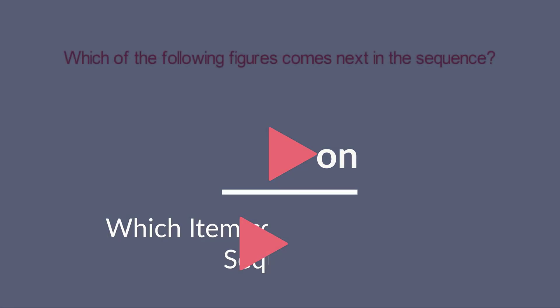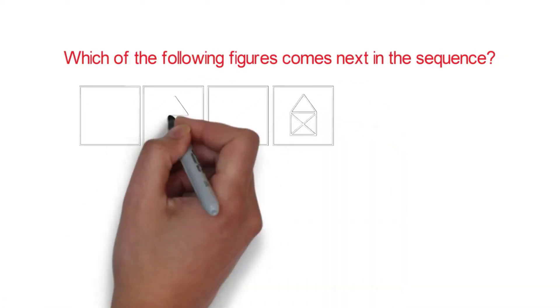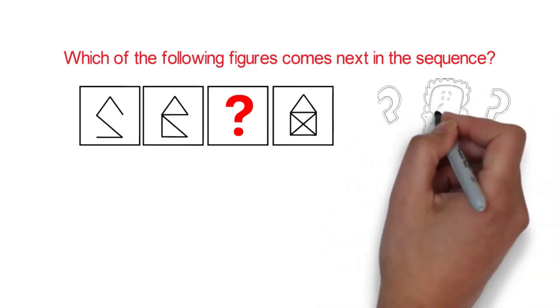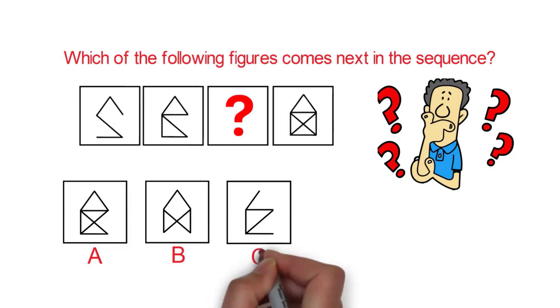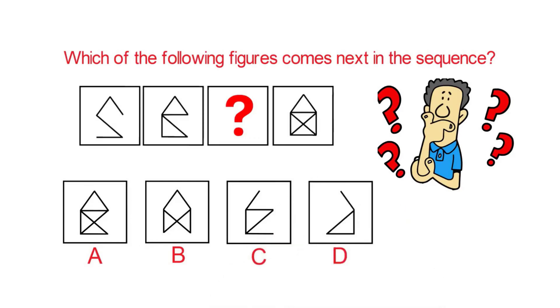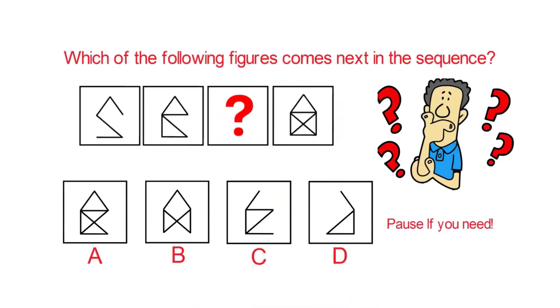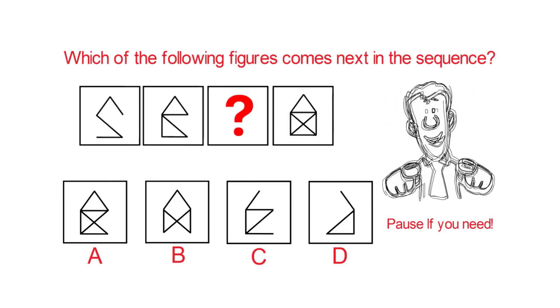Here is an example of an excellent problem that you frequently see on the test. You're presented with a series of shapes and you need to determine which shape comes next in the sequence. You have choices A, B, C, and D. Take a close look to see if you can come up with the answer. Give yourself 10 to 15, maybe 20 to 30 seconds — this is about as much time as you get on the test.